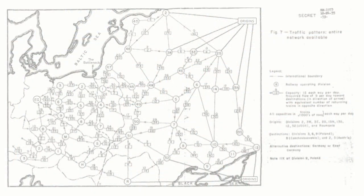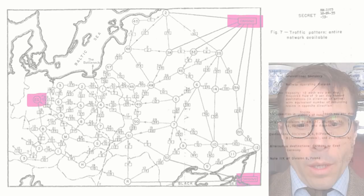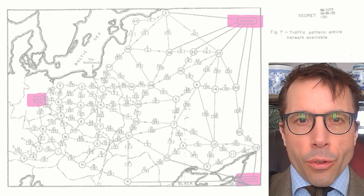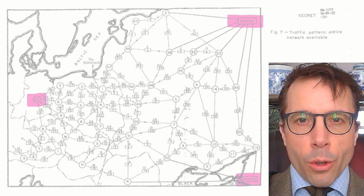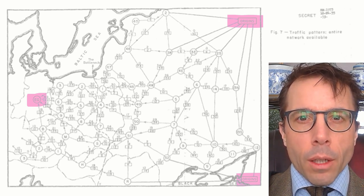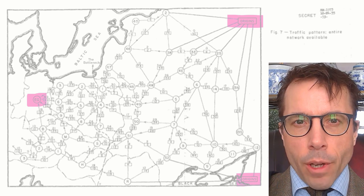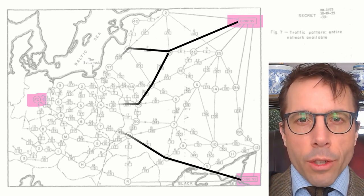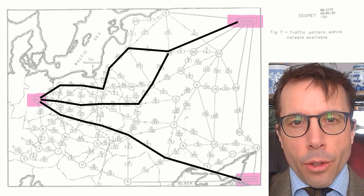In this video we're going to prove that the Ford-Fulkerson algorithm for finding a maximum flow is correct. To understand how the proof works, let's go back to the famous application of flow networks, the RAND Corporation study of rail network capacity in the Soviet Union.